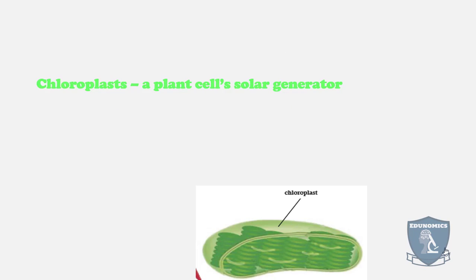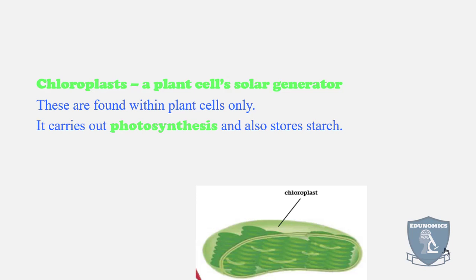Chloroplasts act like mitochondria, but they use solar energy to generate energy. They're the solar generator. They're only found in plant cells; animal cells cannot have chloroplasts. They carry out photosynthesis, the process by which plants make food. This happens within the chloroplasts.